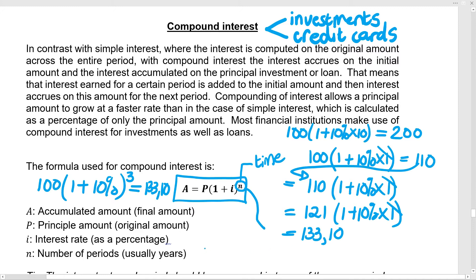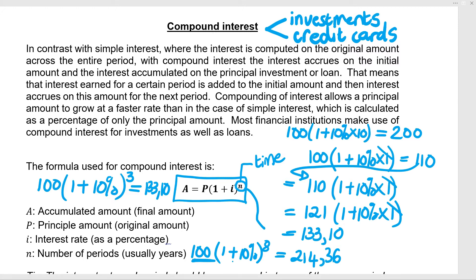Let's put in R100 at 10% compound interest for eight years — that gets me to R214.36. That's quite a low interest rate and a low amount of money; you can imagine what would happen with a million rand at 15% compound interest. You can see it's hitting the R200 mark way before 10 years — it's hitting it at eight years, and even getting beyond R200 in those eight years.